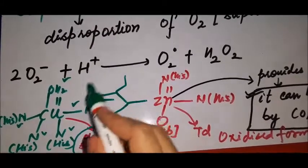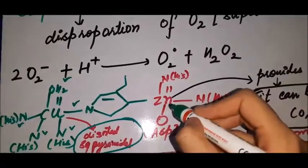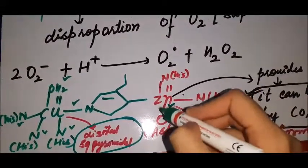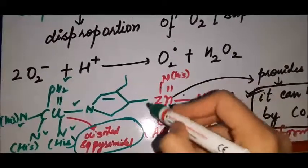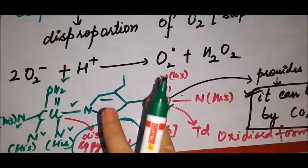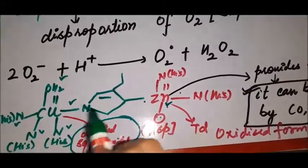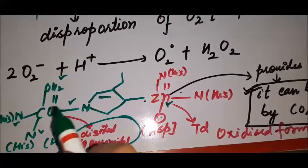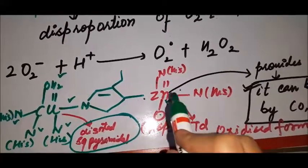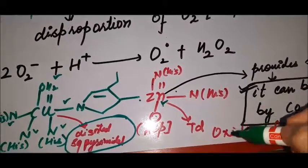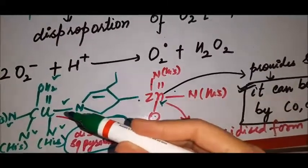The zinc center has four-coordinate geometry — it is tetrahedral. So the two structures are different: the copper site is distorted square pyramidal and the zinc site is tetrahedral. This difference is a very important point to remember.